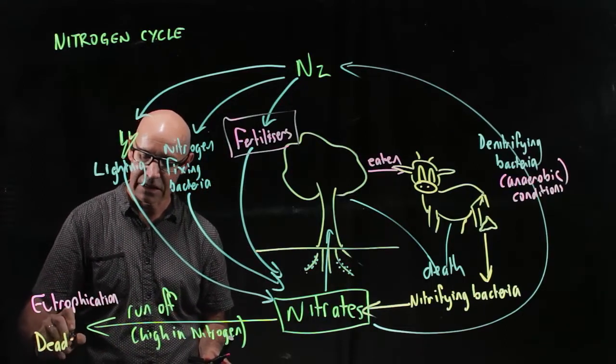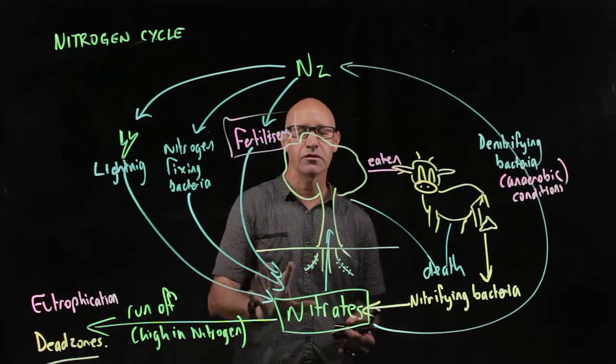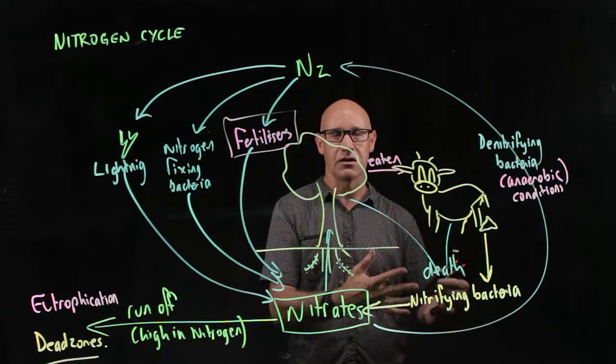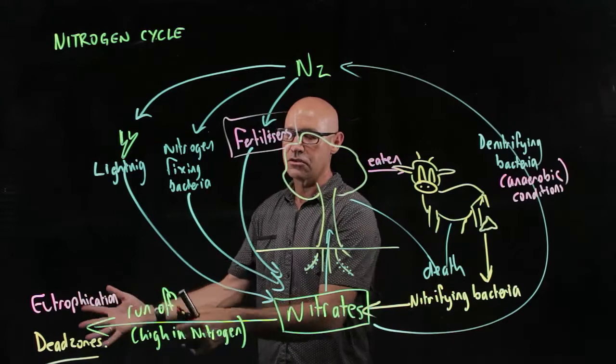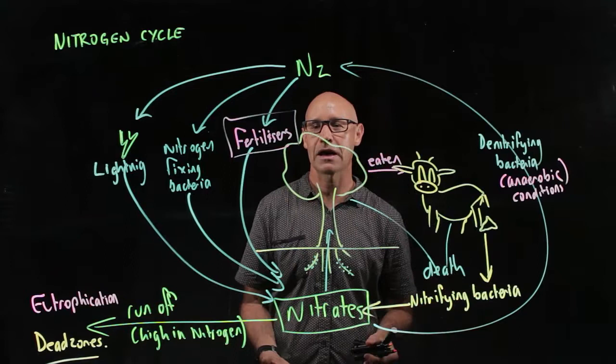So more on that in another video but certainly what humans do when they put fertilizer onto an ecosystem is they need to, well there's this negative impact where some of that nitrogen rich fertilizer can actually run off into other ecosystems and have a negative impact.